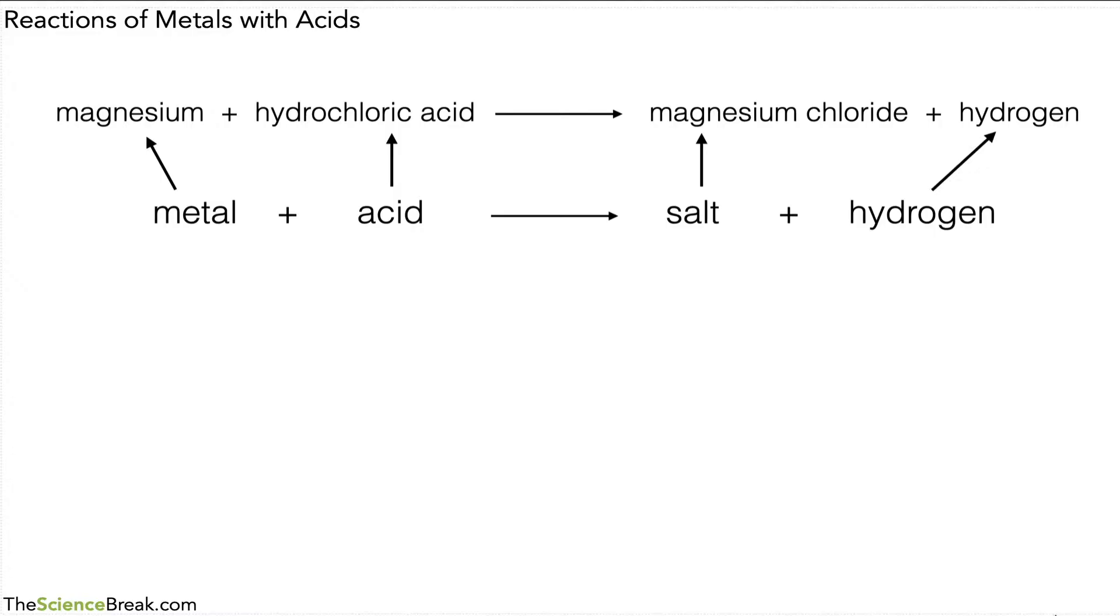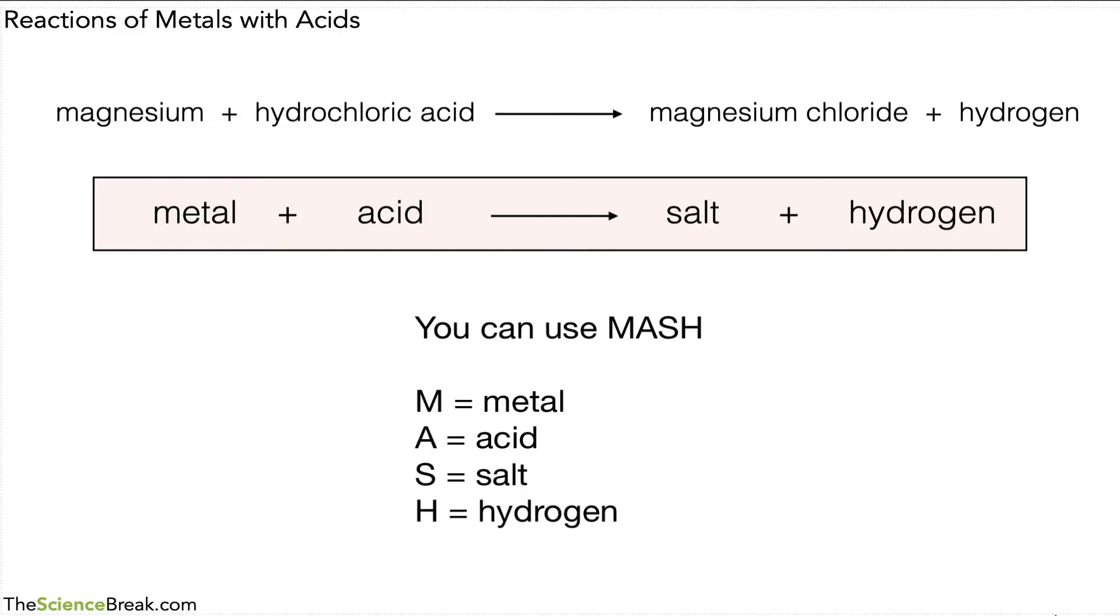So this is a general equation and it's quite important to remember this, so it's worth highlighting. So I'm just going to put a box around it and give it a highlight there, and we can remember this by using the word MASH. Metal plus acid gives salt and hydrogen. That's just a memory trigger to help you remember that general equation.